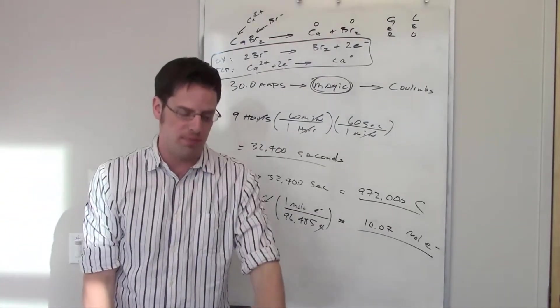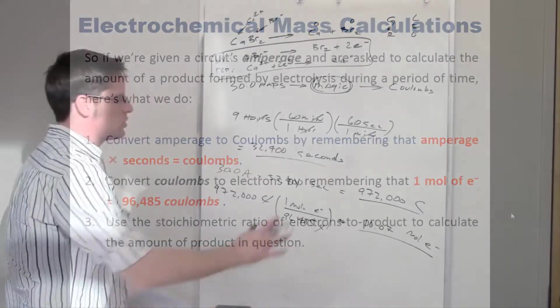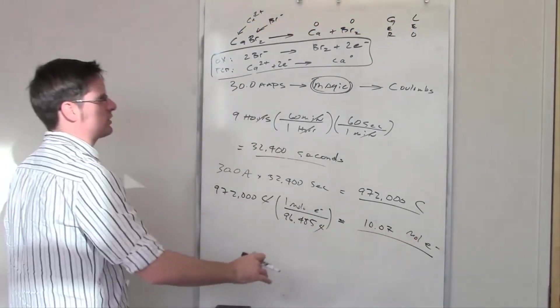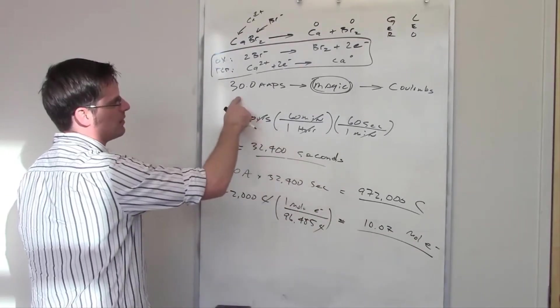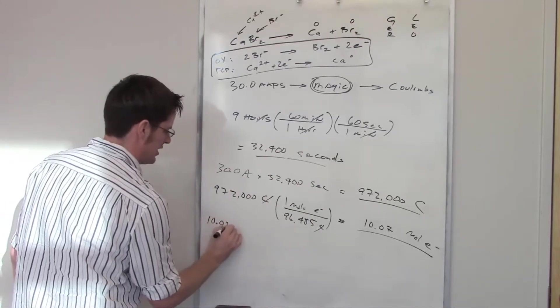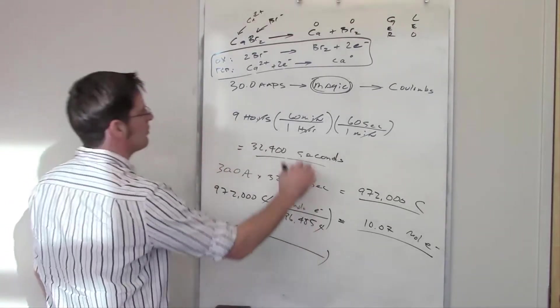Those two electrons are then feeding into the Ca²⁺ ion and are being used or absorbed by that ion to turn it into Ca⁰, which is calcium metal. This is a two-electron process. So that takes me to step three, which says: use the stoichiometric ratio of electrons to product to calculate the amount of product in question.